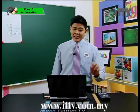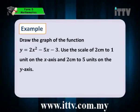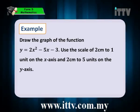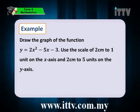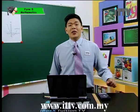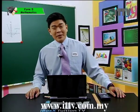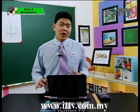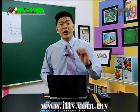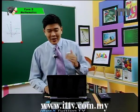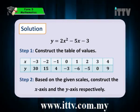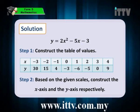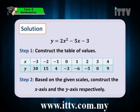Let's begin by taking a look at this example: draw the graph of the function y equals 2x squared minus 5x minus 3. Use a scale of 2 centimeters to 1 unit on the x-axis and 2 centimeters to 5 units on the y-axis. When drawing graphs, you must use graph paper and follow the given scales. We are given a quadratic function: y equals 2x squared minus 5x minus 3. Step 1: construct the table of values.